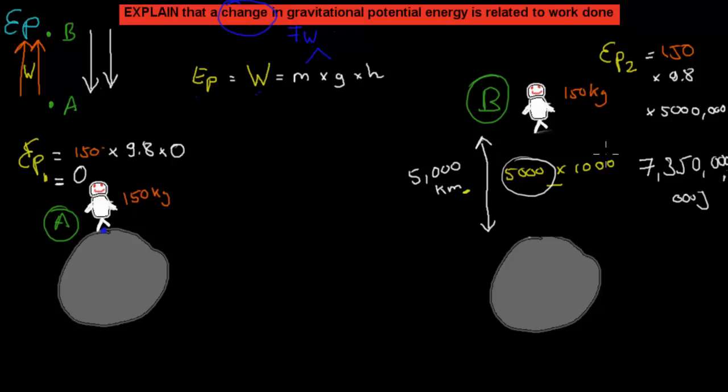And then to get the actual difference between those two numbers, we would have EP2, so the second potential energy, minus first potential energy. And that would give us the difference between the two. In this case, because the difference starts at zero, so no potential energy, and ends up with this big number, obviously the difference between the two would be this number, that's the difference between the two.